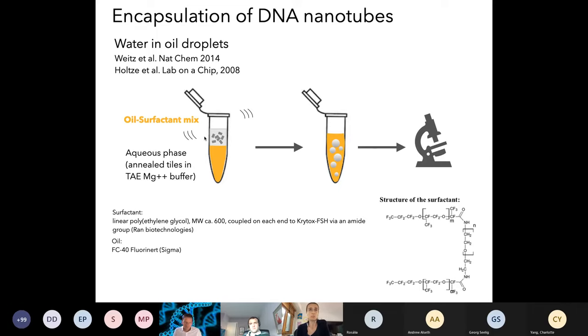If you want more details about what type of water and oil droplets we're using, it's basically a work that was published before by Holtz et al. in 2008. Later on, in collaboration with Fritz Simmel, we showed that you can encapsulate oscillators and other chemical reactions into these oil droplets with minimal interactions with the surface. There's an aqueous phase here that is a TAE magnesium buffer with the DNA tiles, and then by simple vortexing, we simply vortex the sample, create the droplets, and then we image them.